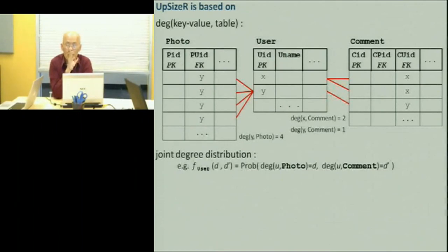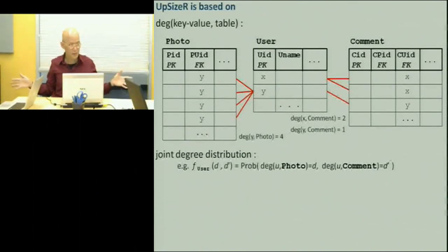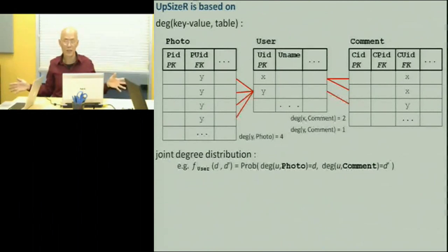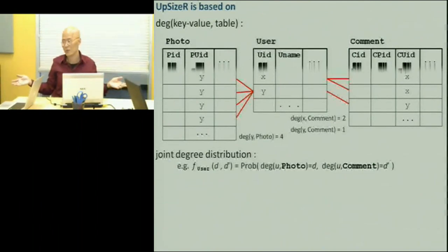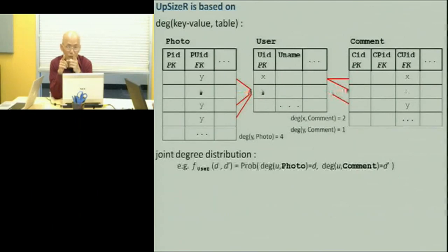The next thing that Upsizer uses is the joint degree distribution. This would also appear if you take a join of the whole thing. The idea of a joint degree distribution is that if I'm a user, I upload a certain number of photographs and make a certain number of comments, and these are correlated because people like to comment on their own photographs. Similarly, two columns in a non-normalized table might have this kind of correlation.